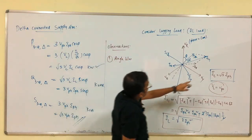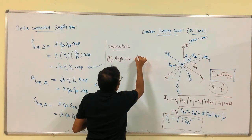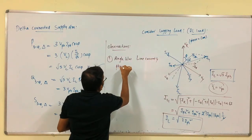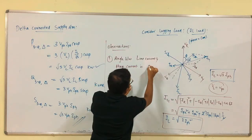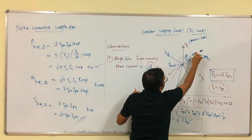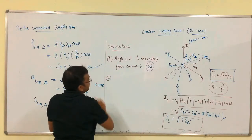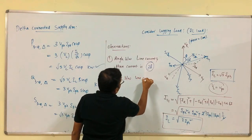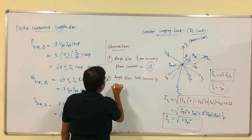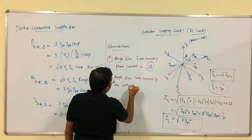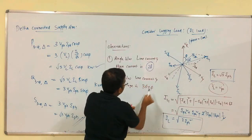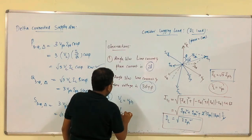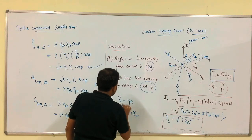Key observations: the angle between line current and phase current is 30 degrees. The angle between line current and line voltage is 30 + φ degrees. The relationships are V_L = V_phase and I_L = √3 × I_phase.